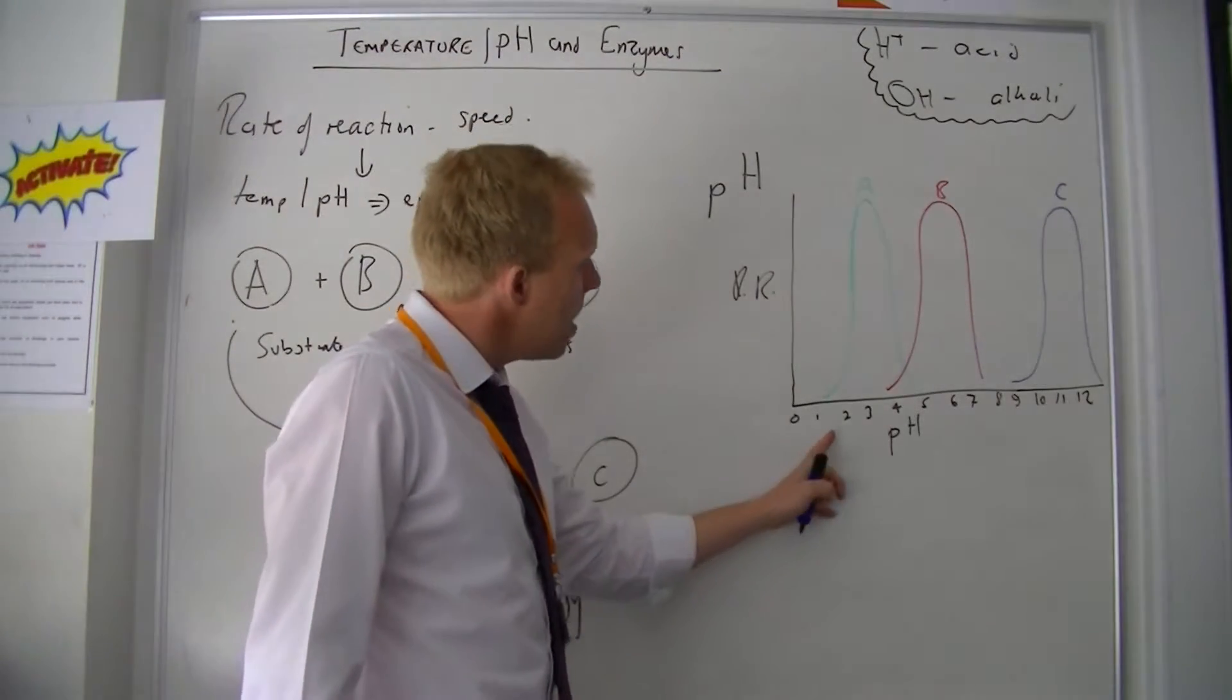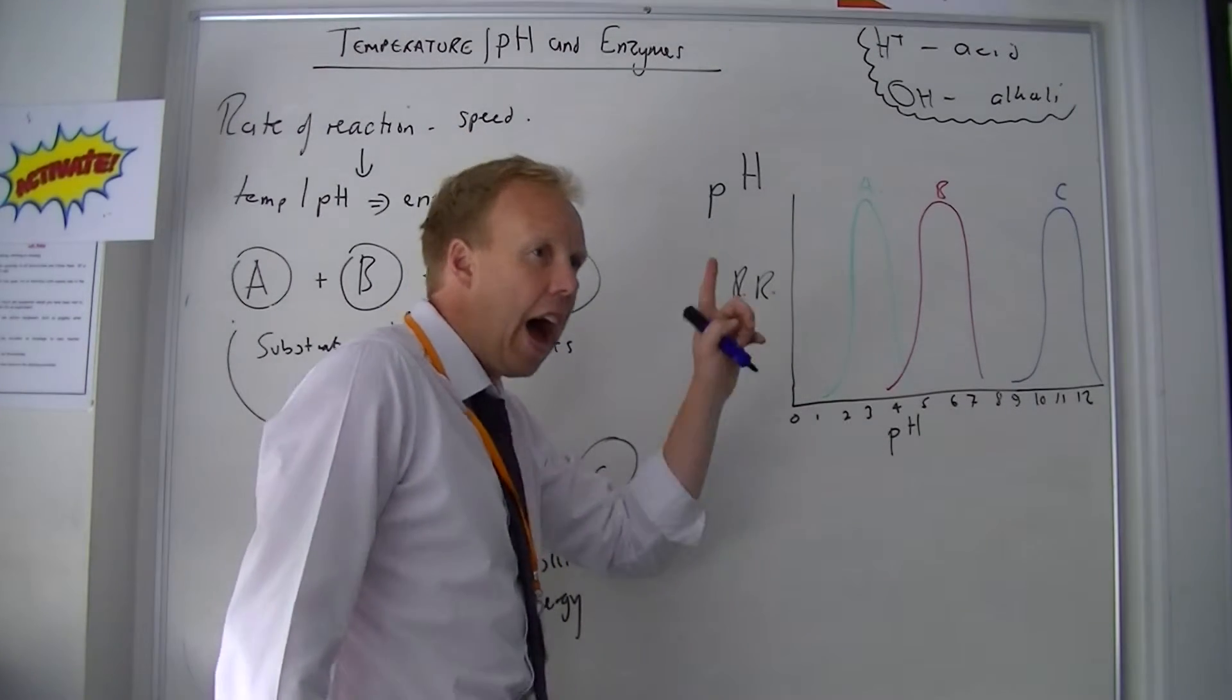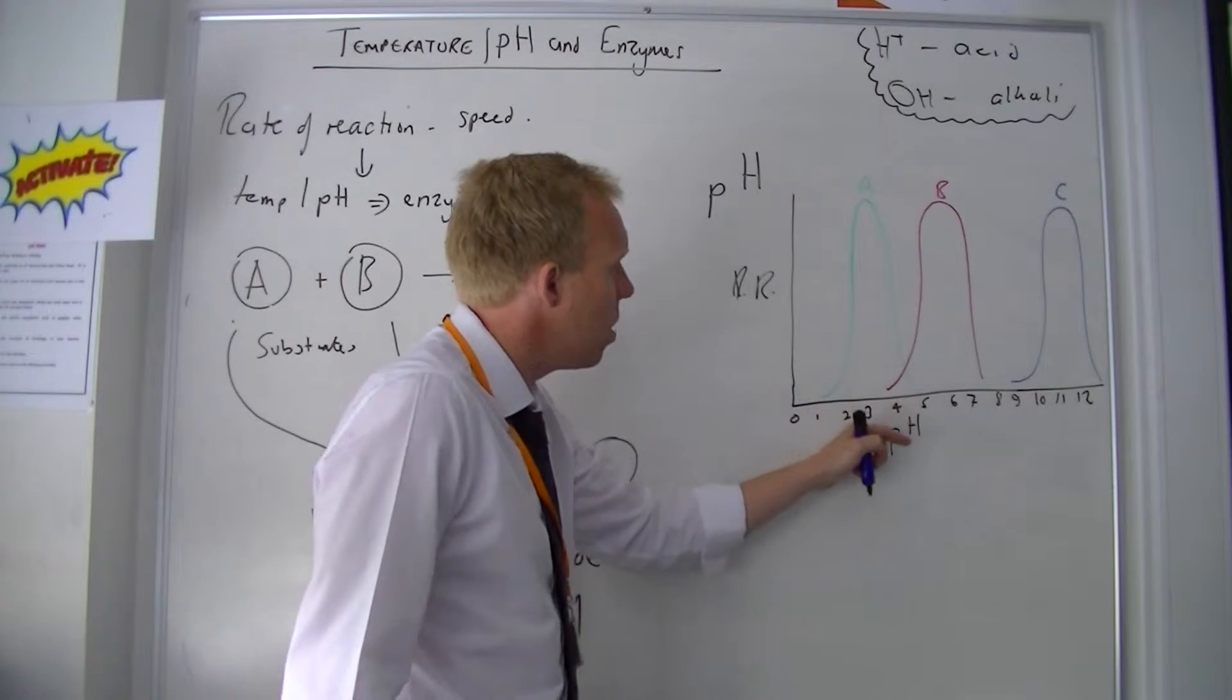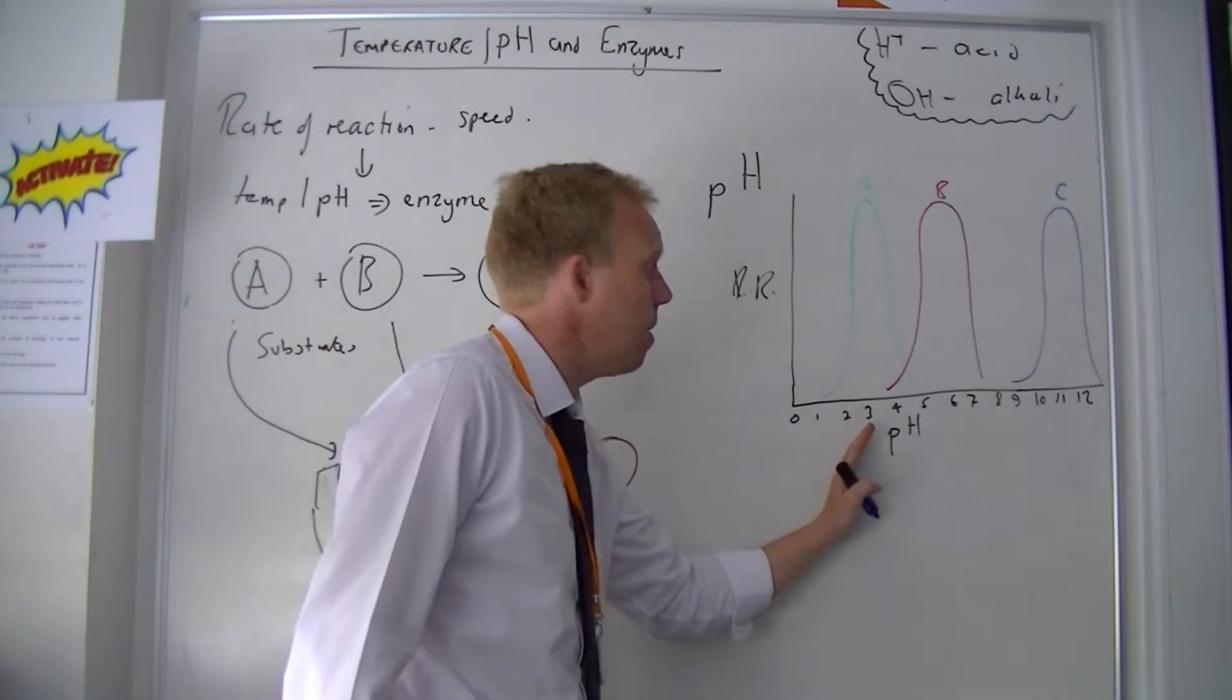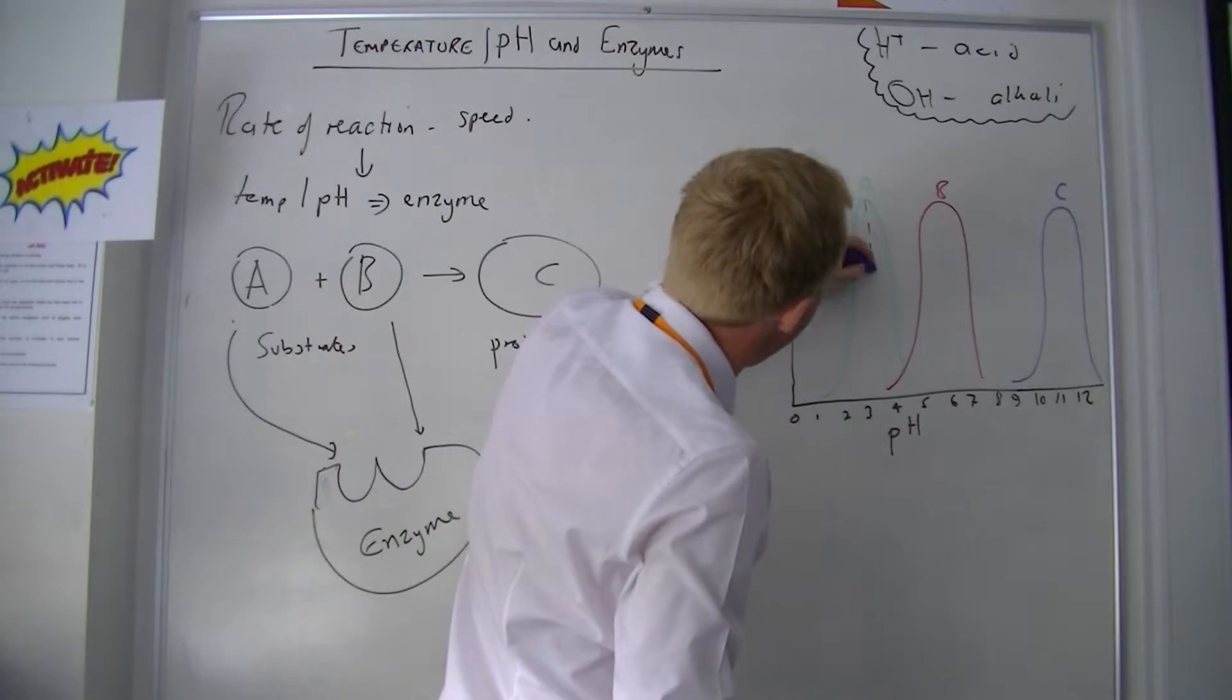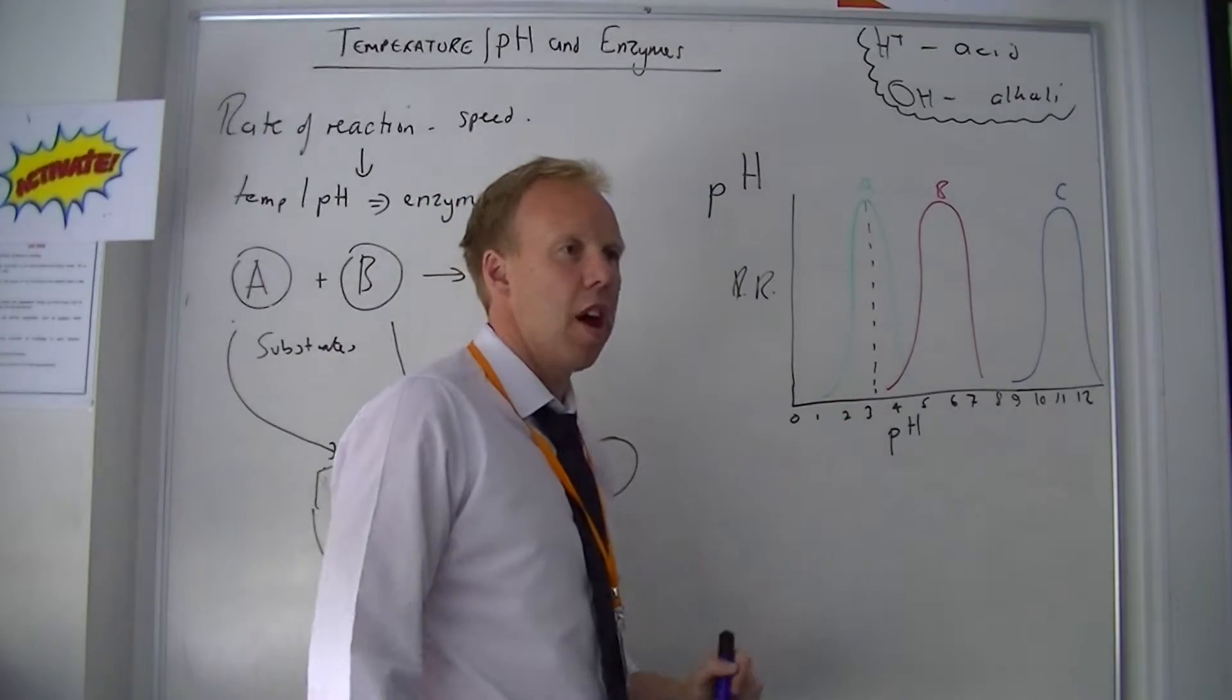The concept that pH and rate of reaction are linked and that certain enzymes will only work at certain pHs. I hope you can see that enzyme A works best around 3 or 4, an acidic pH.